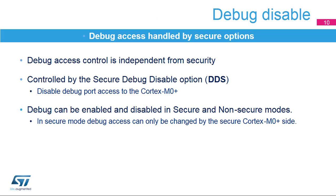Cortex-M0 Plus Debug Access is controlled by the Debug Disable option bit. It is independent from security and can be enabled and disabled in both Secure and Non-Secure modes. In Secure Mode, Debug Access Control can only be changed by the Secure Cortex-M0 Plus side.